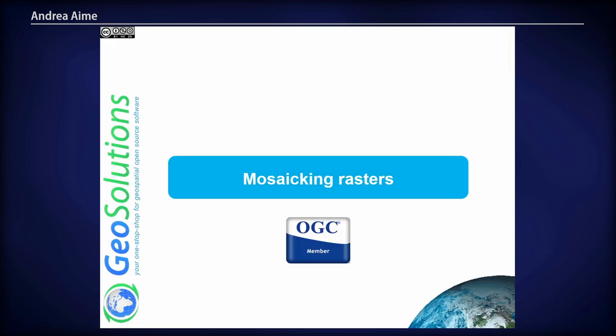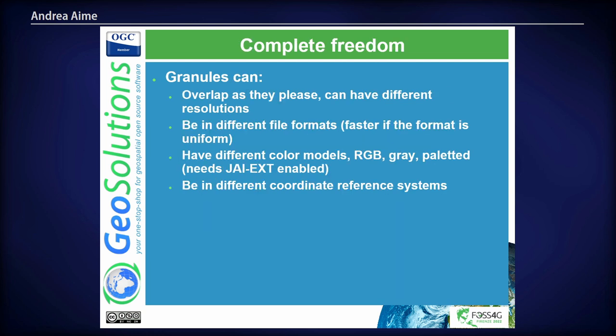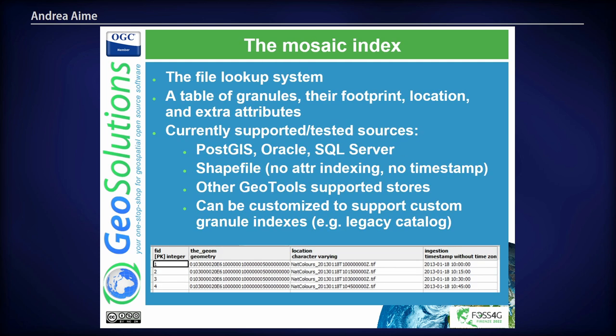Once I can access the raster data, how do I put it together? Typically with an image mosaic. I've located a bunch of products and I want to see them together. We use the GeoServer mosaicing machinery to locate and assemble the data. The mosaicing machinery is powerful enough to fetch and mosaic together data in different coordinate reference systems, different color models, and different resolutions — which is very important for Sentinel-2, where each product is in a different UTM zone and different bands have different resolutions. The mosaic index is typically stored in a database like PostGIS or a SQL server, but it could also be in a shapefile or other sources.